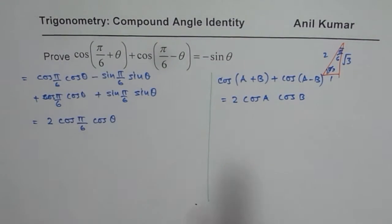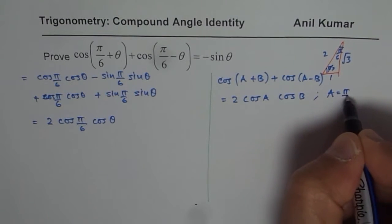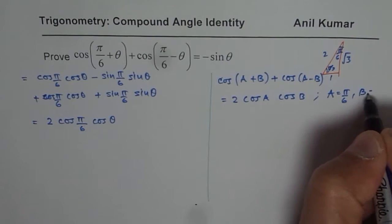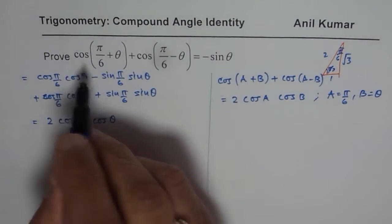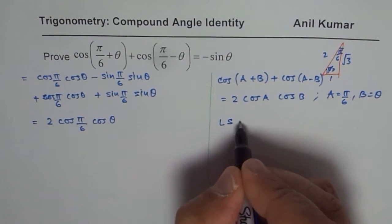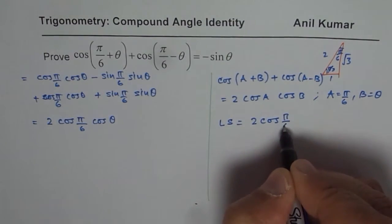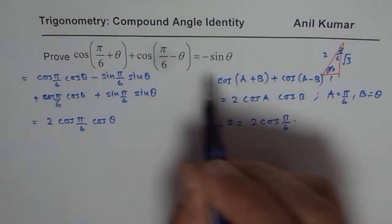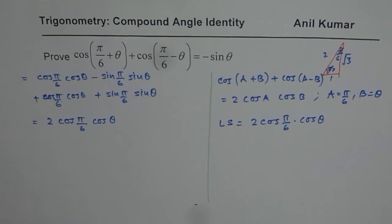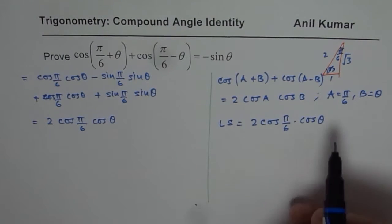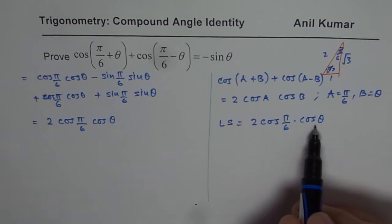Since this is cos A plus B form, where A is pi by 6 and B is theta, you can directly use this formula. The left side equals 2 times cos of pi by 6 times cos theta.